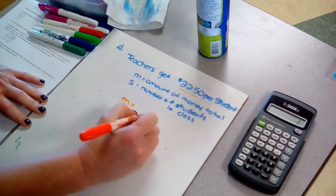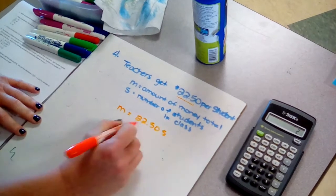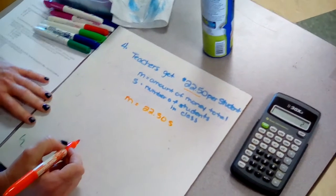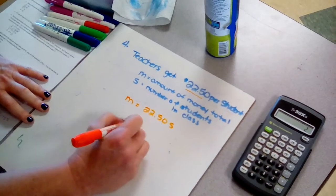So my total amount of money would be equal to the amount that I get per student times the number of students. So that would be the total. The correct answer would be C.